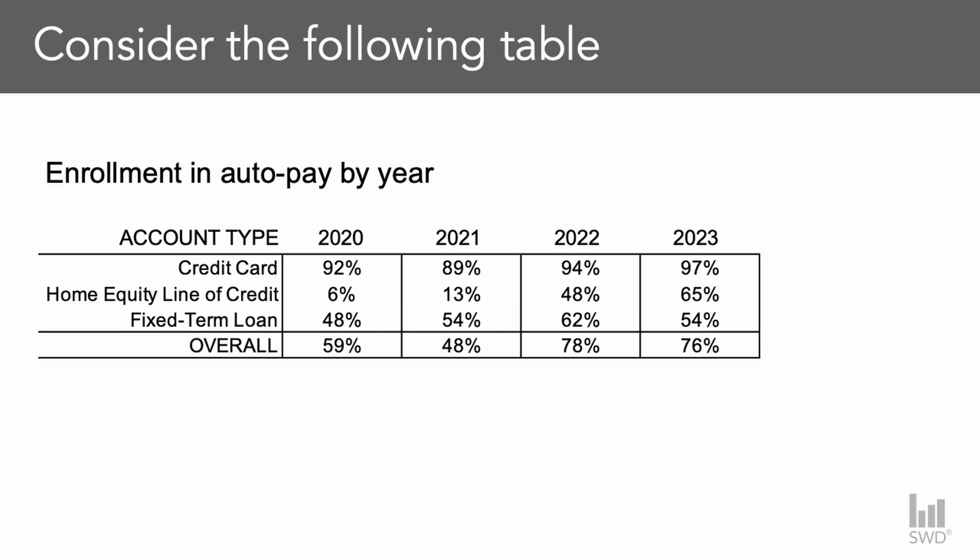Here we're showing a table from the financial services industry, and you can see just by looking at the table that we're looking at enrollment in auto pay over time. Now let me show you the same data in a graph.